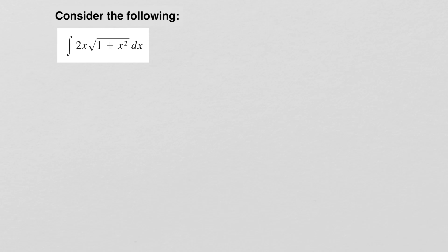Let's suppose we chose to make a substitution. I'm going to let the variable u temporarily represent the expression 1 plus x squared. The reason I would do this is because that would change the square root of 1 plus x squared into the square root of u.